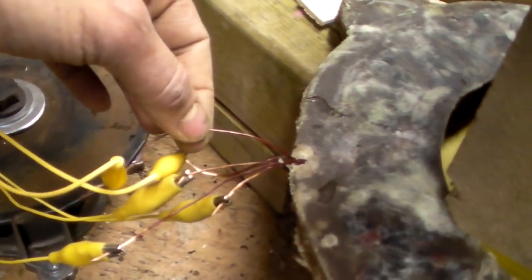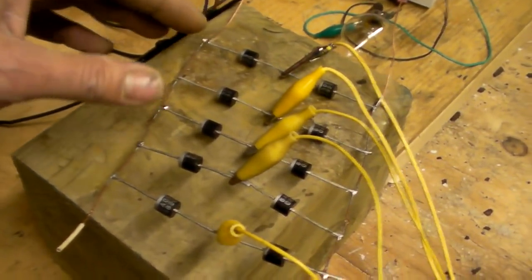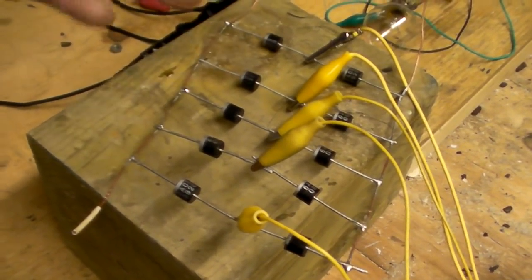They're configured to five phase and the neutral point is right there. And the five phases travel up here. That's the best layout I figured out there.